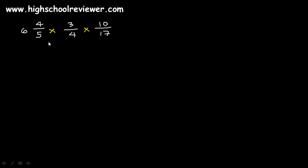We will now multiply 6 and 4 over 5 times 3 over 4 times 10 over 17. In multiplying fractions, make sure that there are no whole numbers. If there are whole numbers, convert them into improper fractions. So let's convert this one.